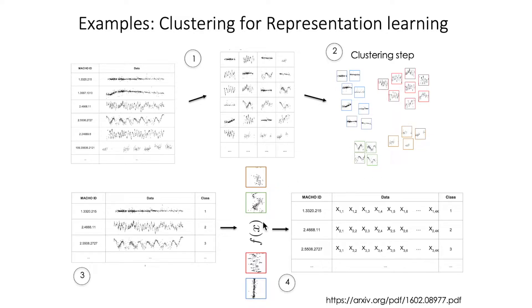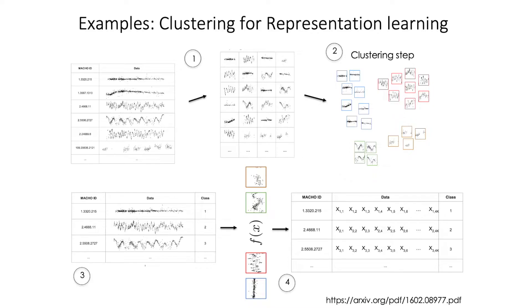We could approximate every time series as a combination of these templates, and the coefficients of that combination become the new representation for each time series. The good thing is that now every time series is represented as a vector of the same length. Initially, time series could be of different lengths, which is complicated for most machine learning algorithms. But by running clustering to find templates and writing every time series as a combination of those templates, the weights of the combination serve as the new representation vector, and all data entries live in the same dimensional space.